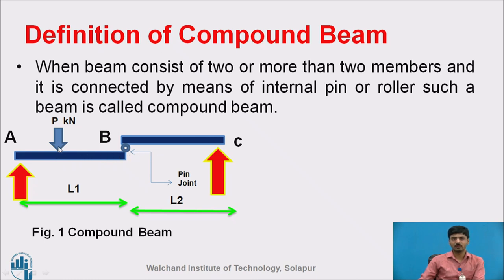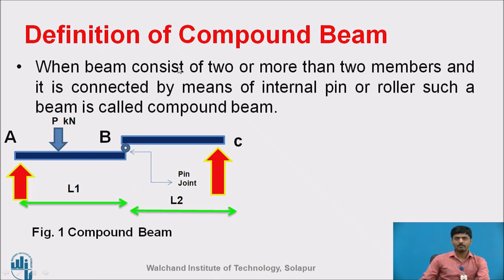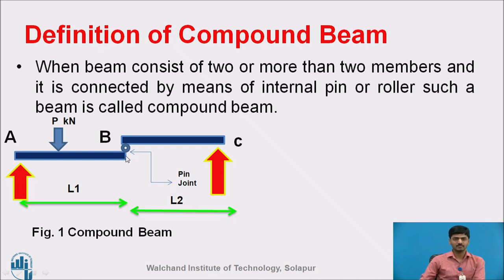On segment AB, one additional external load P is present — sometimes called a point load. On segment BC, there is no external load. The span of the first segment is L1 and the span of the second segment is L2. A compound beam is when two or more members are connected by an internal pin or roller. Such a beam is called a compound beam.